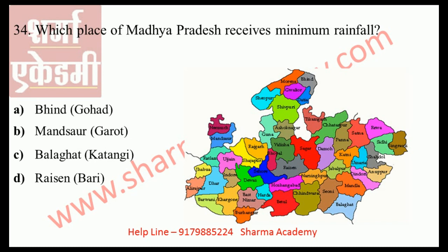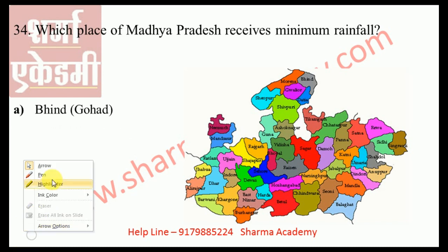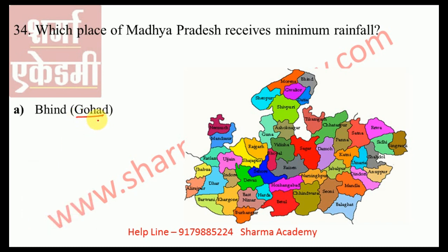Which place of Madhya Pradesh receives minimum rainfall? Options: Bhind, Mandsaur, Balaghat, or Raisen. The correct answer is Bhind — specifically the place Gohad in Bhind district. Gohad, the least rainy place in the north part of Madhya Pradesh, receives only 55 centimeters of rainfall, varying between 50 to 75 centimeters. The amount of rainfall in Madhya Pradesh decreases from east to west — it is very high in the east but decreases greatly in the northwest.